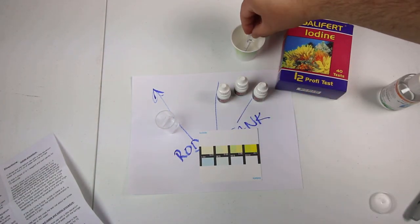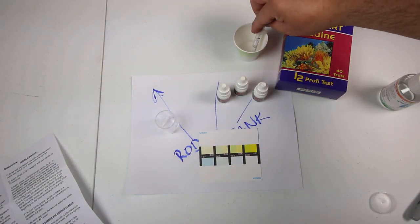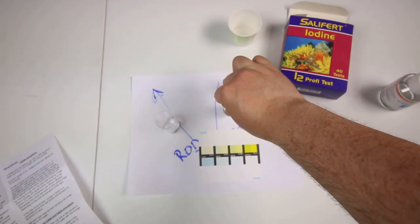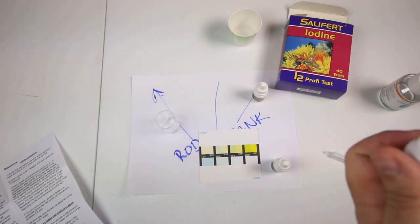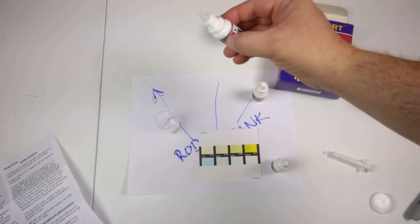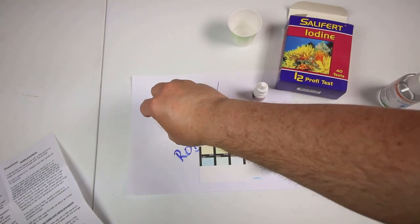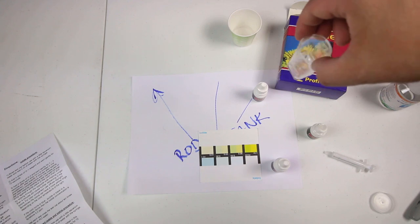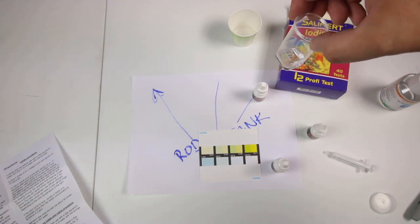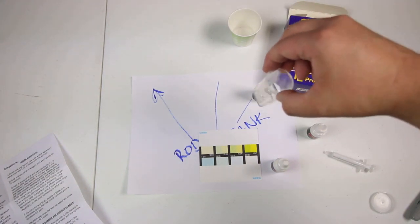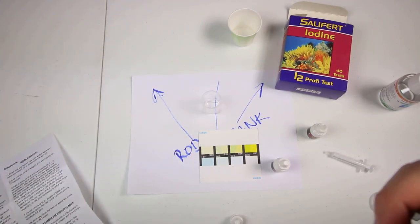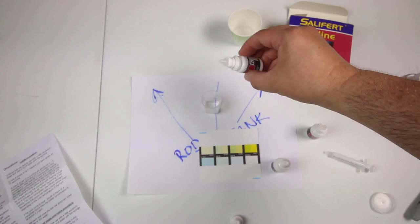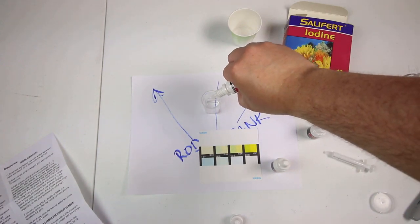Okay so for iodine we are going to be doing one milliliter of water from our tank and then we will add one drop of number two. One drop and then we're going to gently swirl for 10 seconds. This is actually a super simple test kit. It takes no time at all, 10 seconds, and then we are going to add four drops of the number three. After four drops is done we're going to gently swirl for 10 seconds and then let it stand for three minutes.